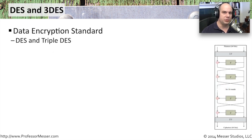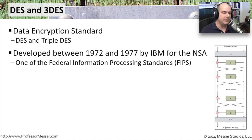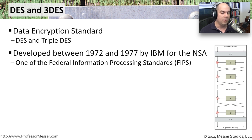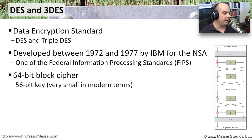Another common set of symmetric key ciphers is both DES and Triple DES — you'll occasionally see Triple DES abbreviated as 3DES. DES stands for the Data Encryption Standard. It was created between 1972 and 1977 specifically for the National Security Agency in the United States by IBM, becoming part of the FIPS standard, or Federal Information Processing Standards. DES was a 64-bit block cipher that used a 56-bit key — a very small key — and as processing power has gotten faster in modern times, it became very simple to brute force a DES key.